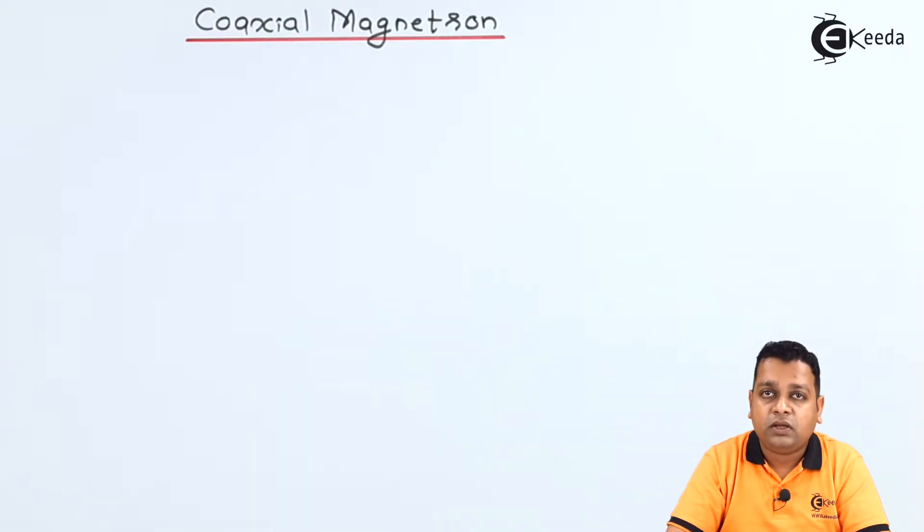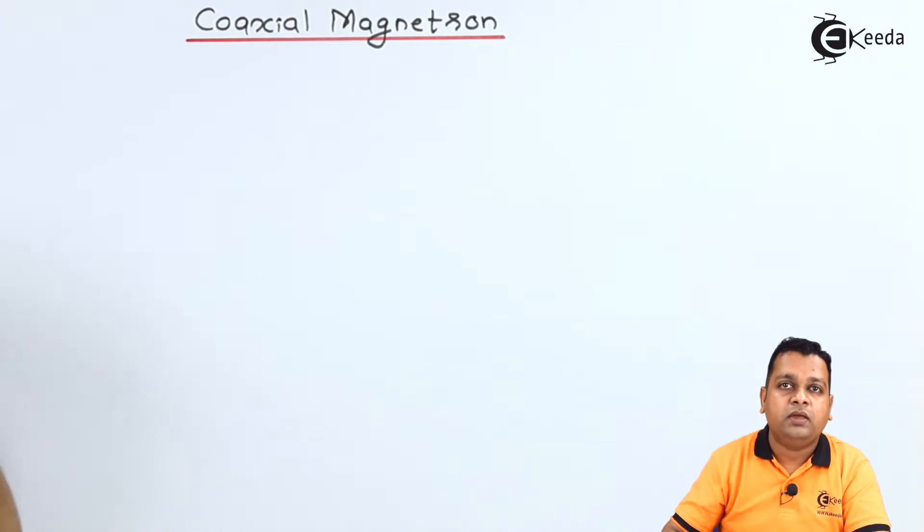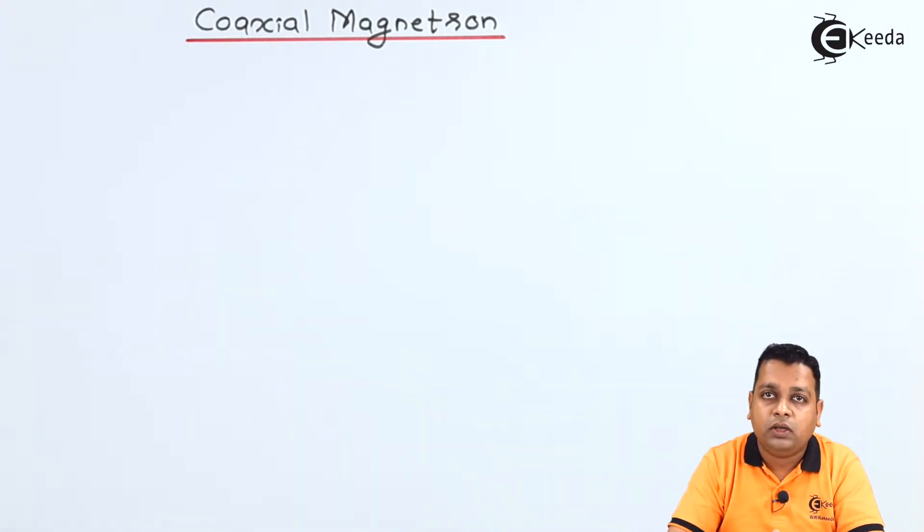So here we start with our topic, the topic is coaxial magnetron. As we have seen before, for a magnetron, there is again essential modification from the conventional vacuum tubes. The two electrodes are common, though we have made the modification. So the electrodes are cathode and anode that are very important.